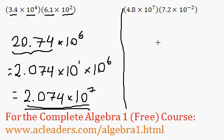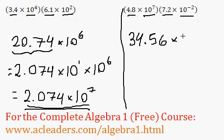Now let's try this one. Similar question. So 4.8 times 7.2 is 34.56. Now, 10 to the 7 times 10 to the negative 2, 7 plus negative 2 is equivalent to 7 minus 2, which is 5.